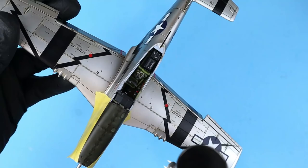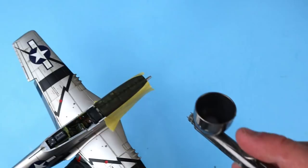To flatten that glossy anti-glare panel I masked it off and applied a coat of AK's Ultra Matte Clear.